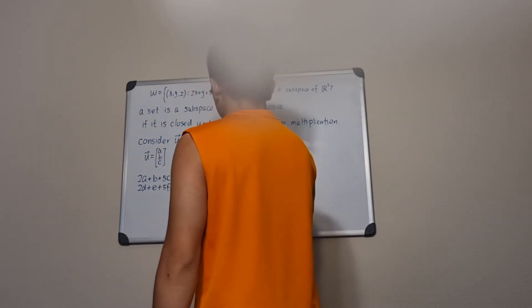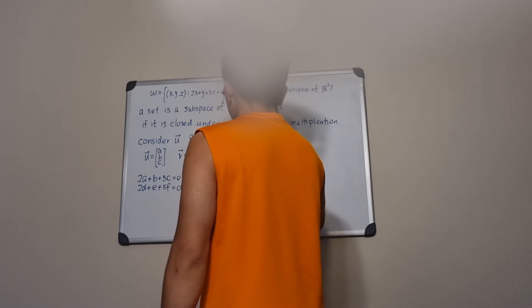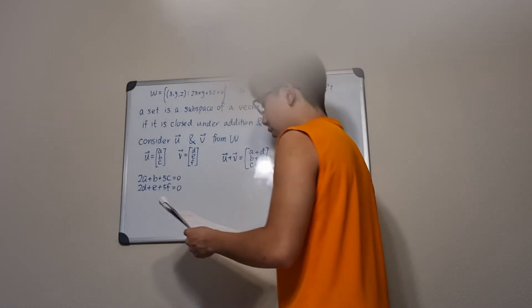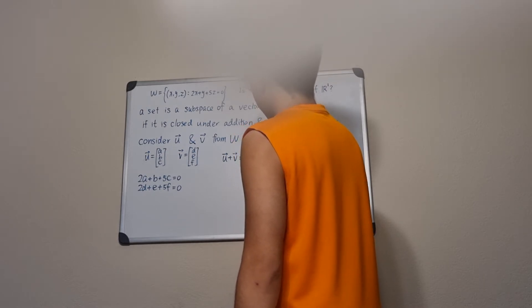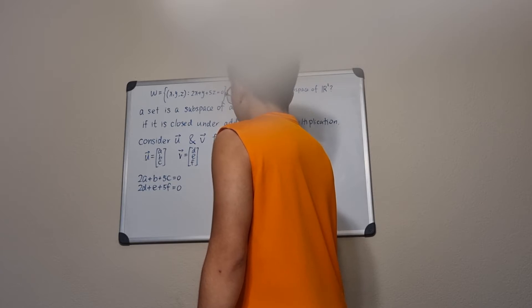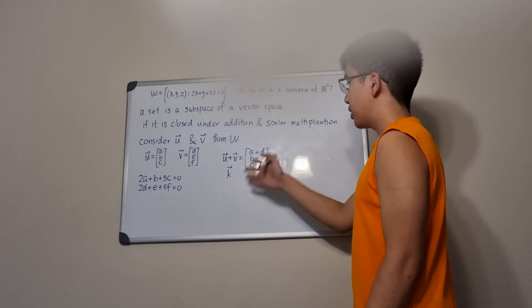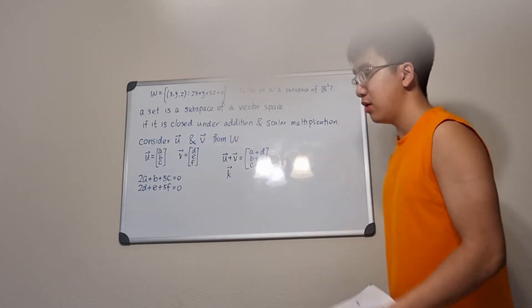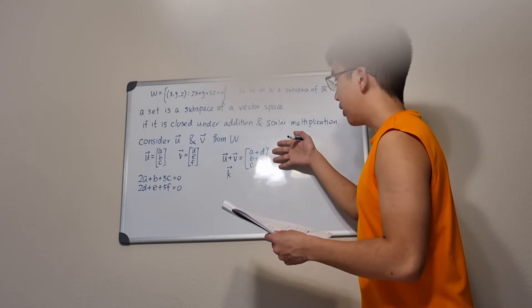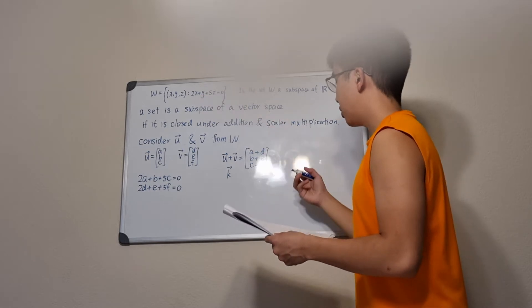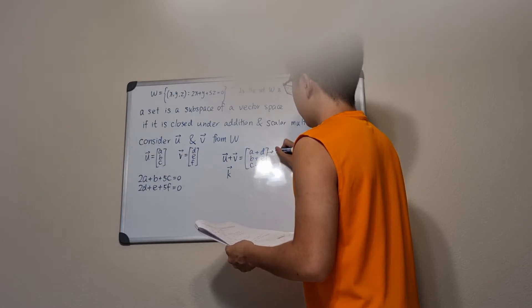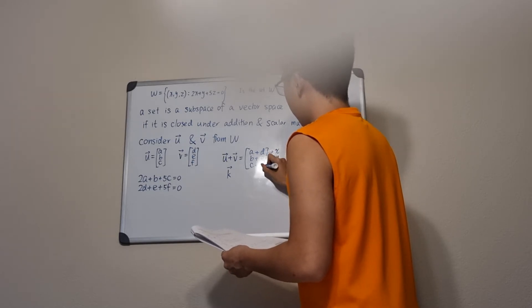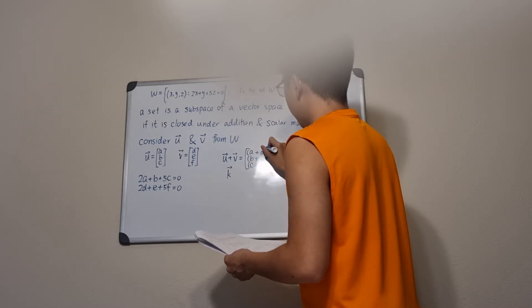When we add the two vectors u and v, we get a new vector with entries (a+d), (b+e), and (c+f). We'll call this vector k. We need to check whether the entries of vector k satisfy the equation, where (a+d) corresponds to x, (b+e) to y, and (c+f) to z.